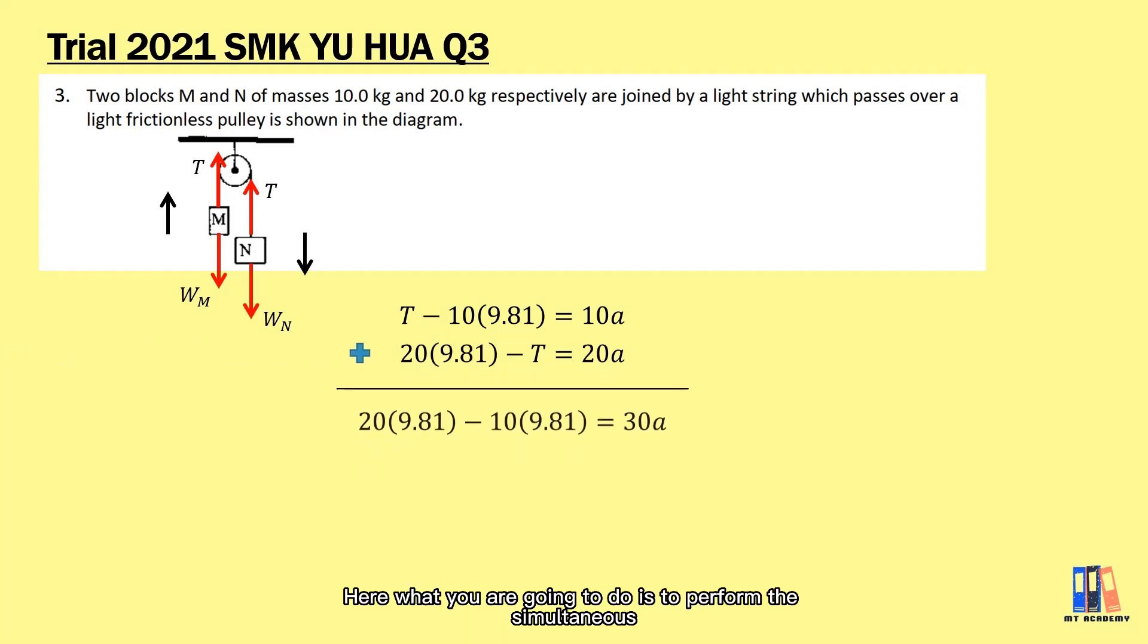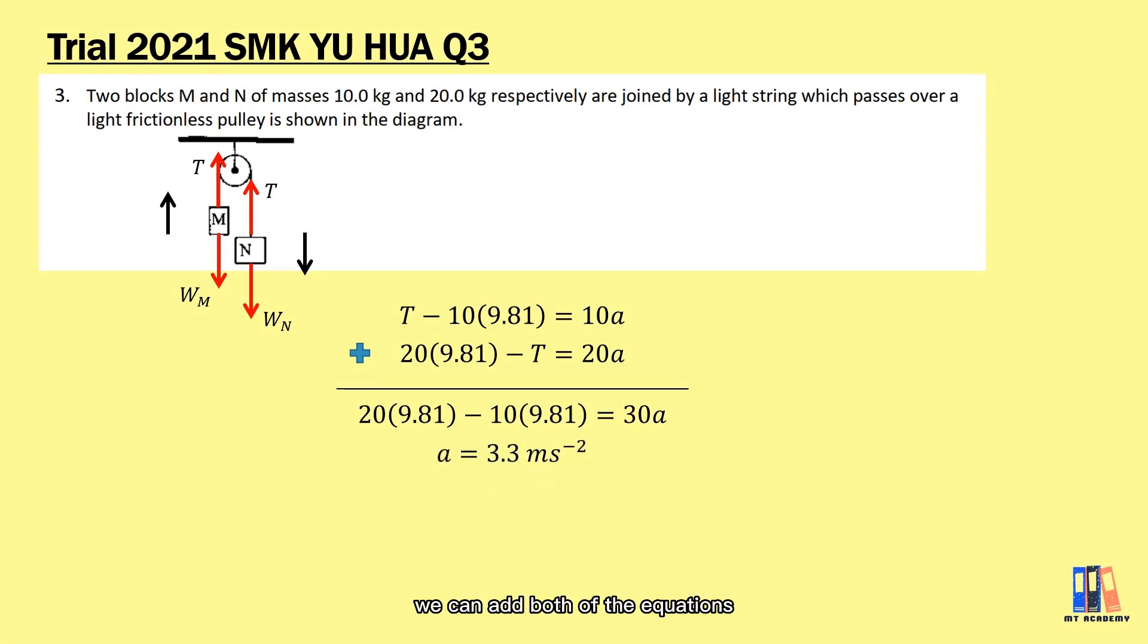Here what you're going to do is perform simultaneous equations. Add both equations and you should be able to obtain the acceleration equals 3.3 m/s². Substitute back the value of acceleration into one of the equations above, and you can obtain the value of tension in the string which is 130.8 N. This is how you solve questions by considering the force on each individual block.